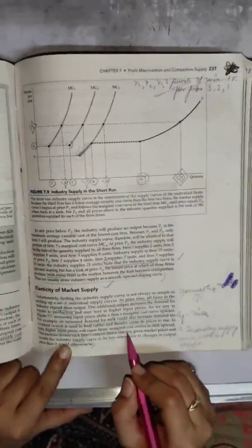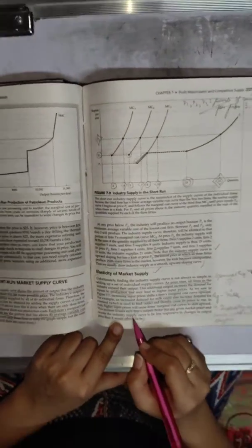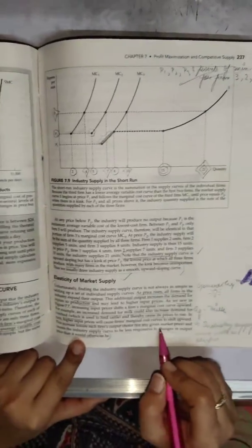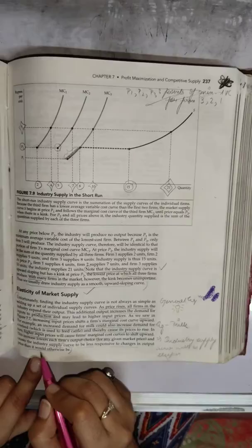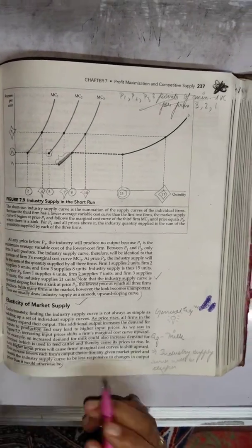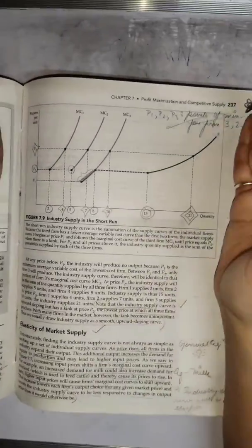This increase lowers each firm's output choice and causes the industry supply curve to be less responsive to changes in output price than it would otherwise be. Basically, they are saying that come at this diagram again.